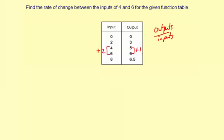So the outputs had a plus 1 change. So I'll put plus 1 divided by, input change was plus 2. So that's simply 1 half or 0.5.